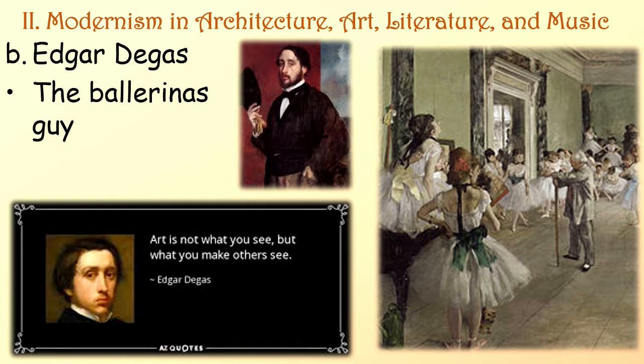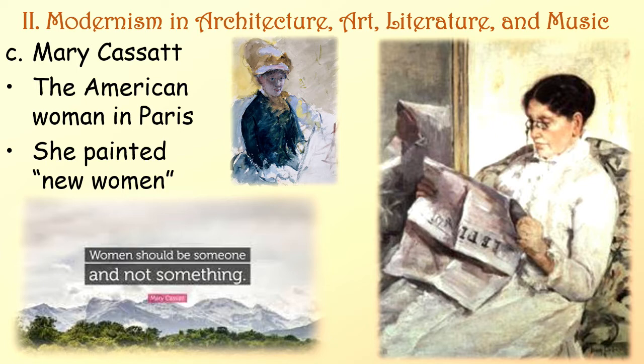There were three major Impressionist artists. Claude Monet—the haystack guy—also painted modern train stations, asking us simply to appreciate his impressions of the colors and light in that moment. Edgar Degas—the ballerina guy. And Mary Cassatt, the American woman in Paris, who painted new women. For example, her painting of a woman sitting with her glasses on, reading her paper—doing something for her own intellectual pursuits, with no man in the picture.